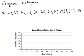Let's talk about a frequency histogram. I have the quality ratings for natural peanut butter and I have a histogram set up down here. You'll notice that this is a relative frequency histogram, meaning I have the percents on the vertical axis instead of the count.